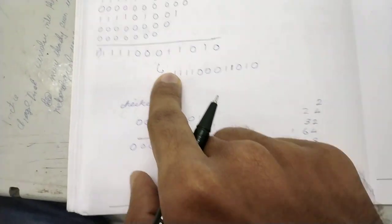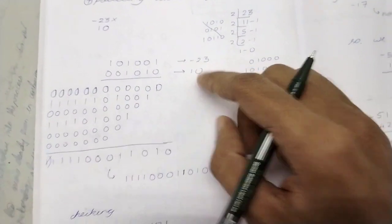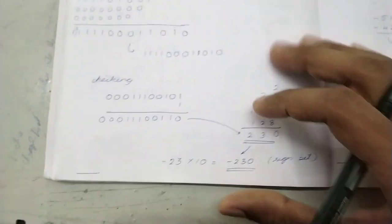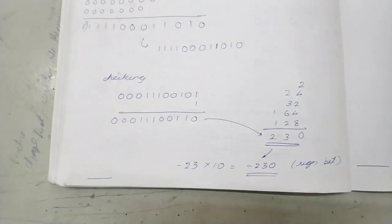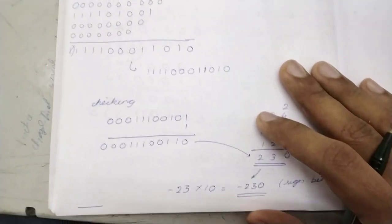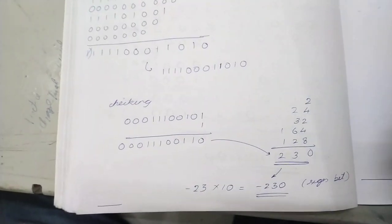As this is a negative number, that minus will be added, minus 230. What was it? Minus 23 into 10. What is the number? Minus 230. So we got this number as minus 230. That's how we do 2's complement multiplication. Thank you.